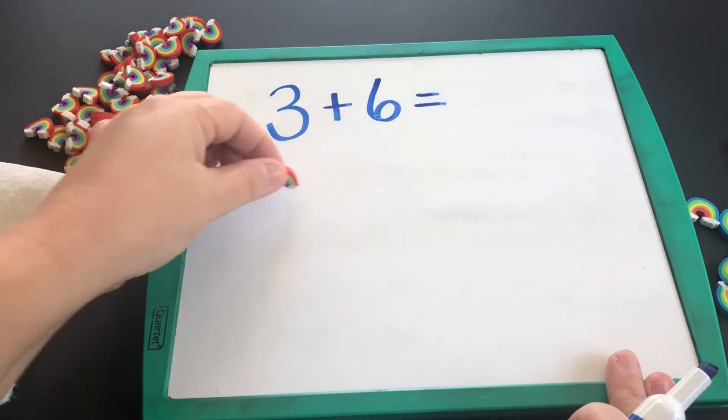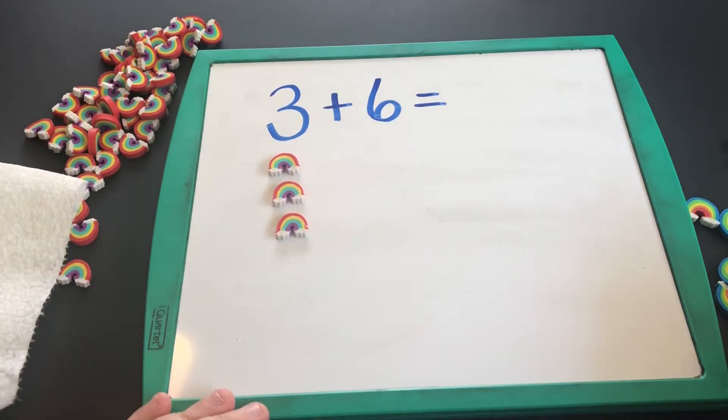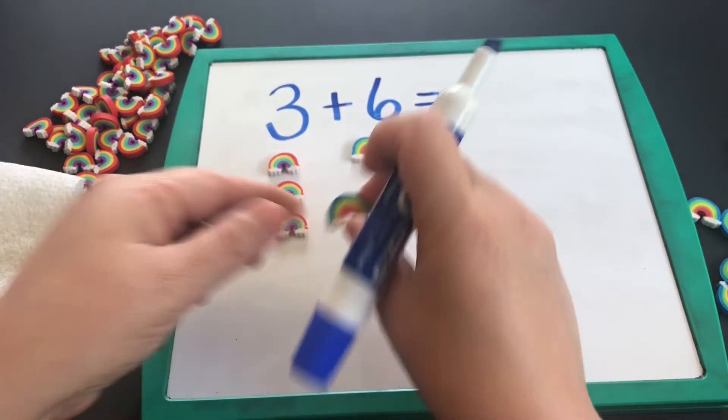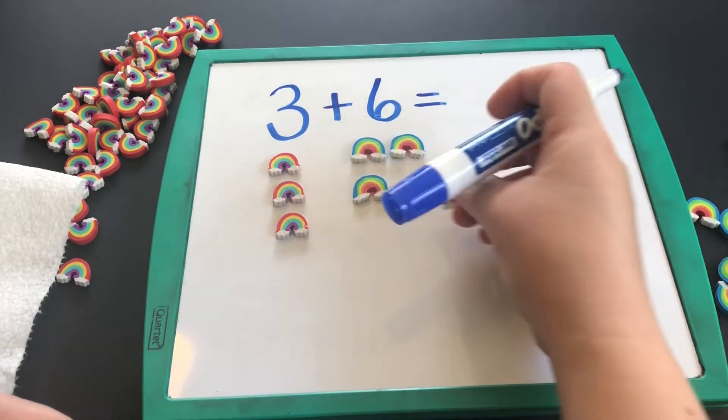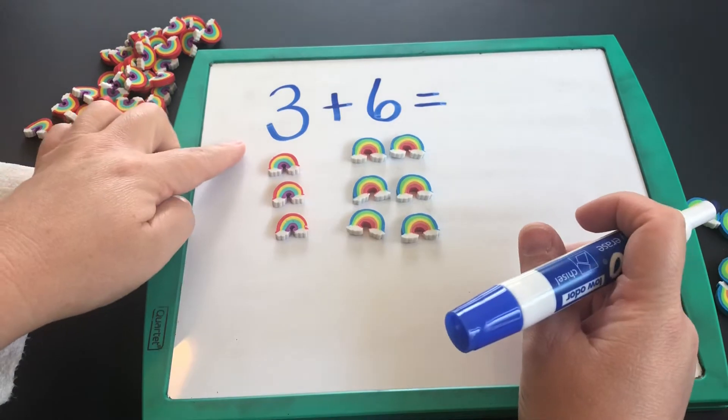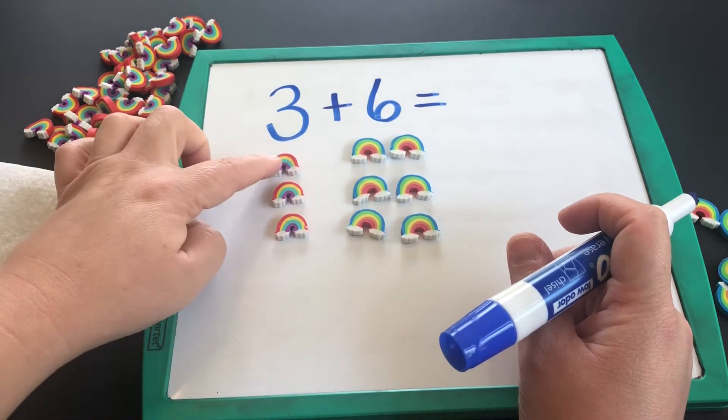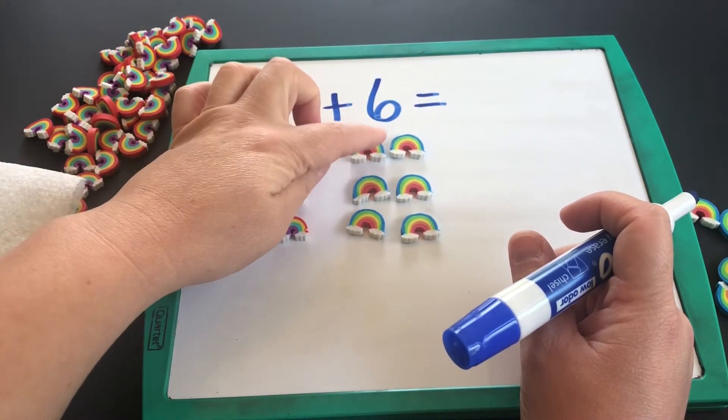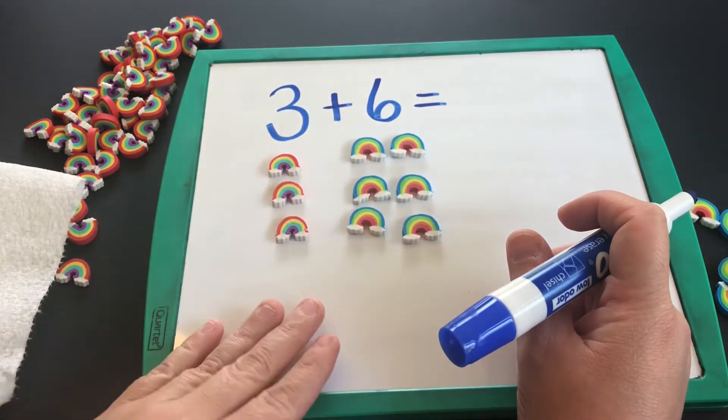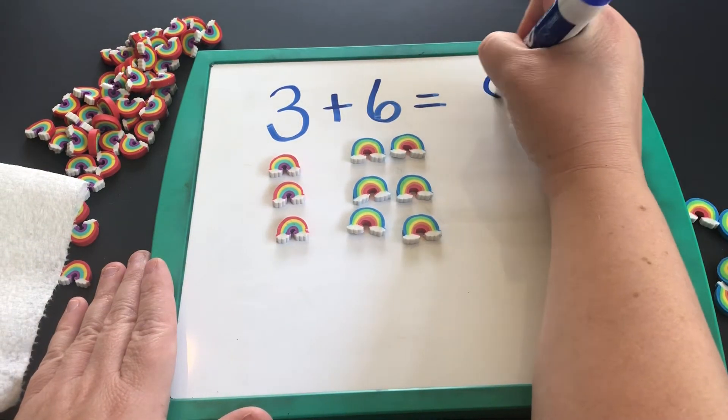I'm going to use some rainbows today to help us out. So I have three rainbows here, plus six rainbows—one, two, three, four, five, six. So three plus six, I'm going to count all my rainbows and see how many I have: one, two, three, four, five, six, seven, eight, nine. So if I add three plus six, it equals nine.